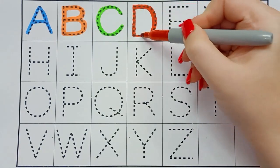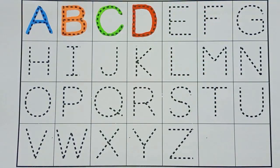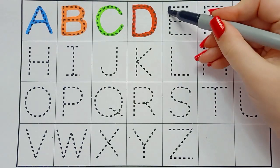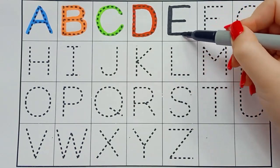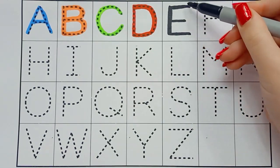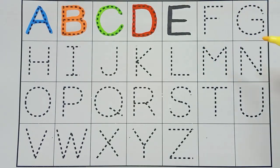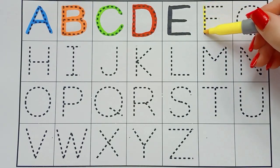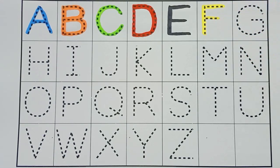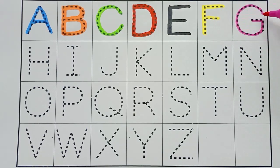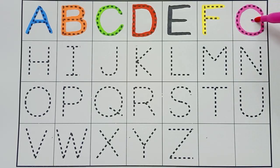A, B, C, D, E, F, G, H, I, J, K, L, M, N, O, P, Q, R, S, T, U, V, W, X, Y, and Z. Now I know my ABCs, next time won't you sing with me?